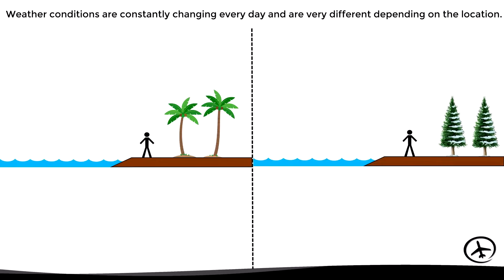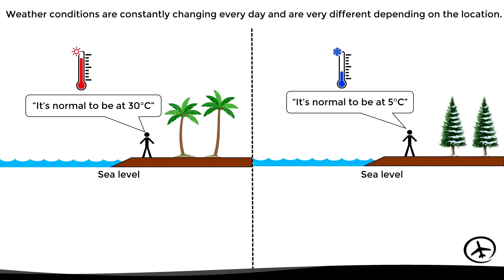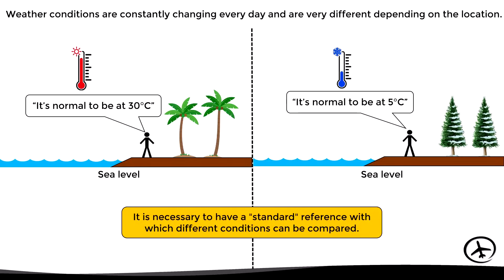For example, here we have two people — one of them is on a coast with a tropical climate, while the other is on a coast with a colder climate. In this case, the person on the tropical coast would say that the usual temperature at sea level is 30 degrees Celsius, while the person on the cold coast would say that the normal temperature at sea level is 5 degrees Celsius. As we can see in this example, for a certain altitude — in this case sea level — we have two different reference temperatures depending on the conditions of each location. This is why it is necessary to have a worldwide standard reference against which different conditions can be compared.